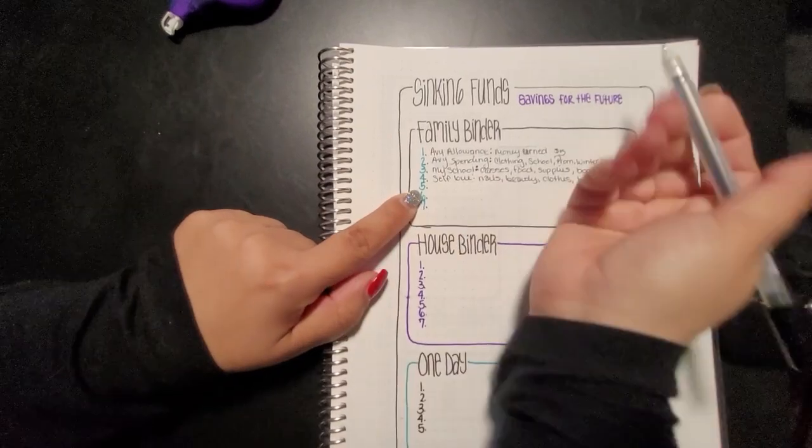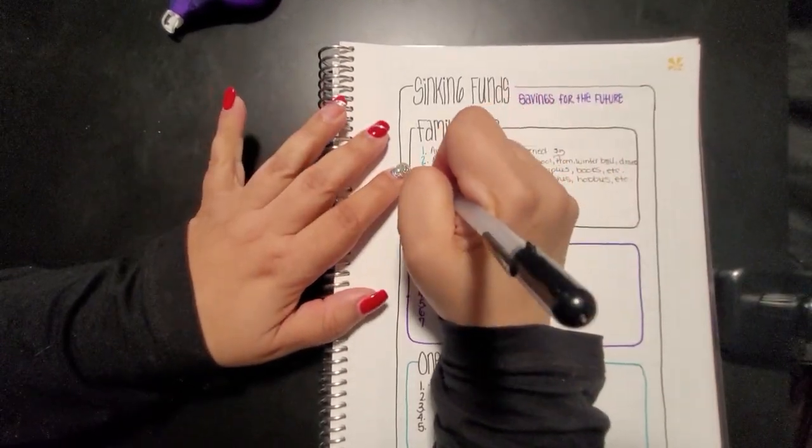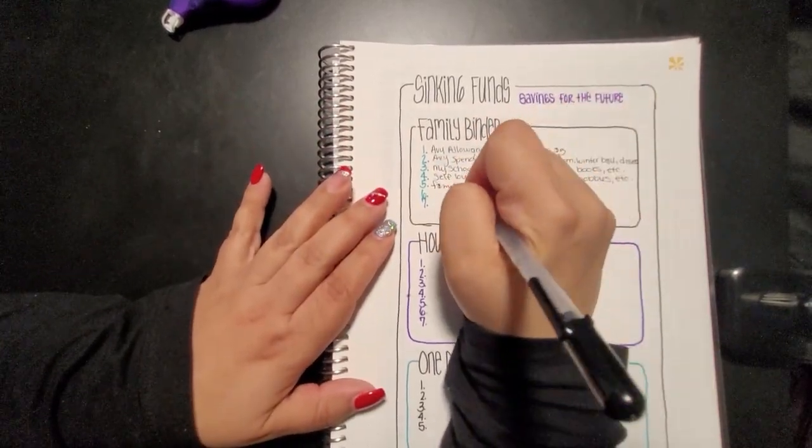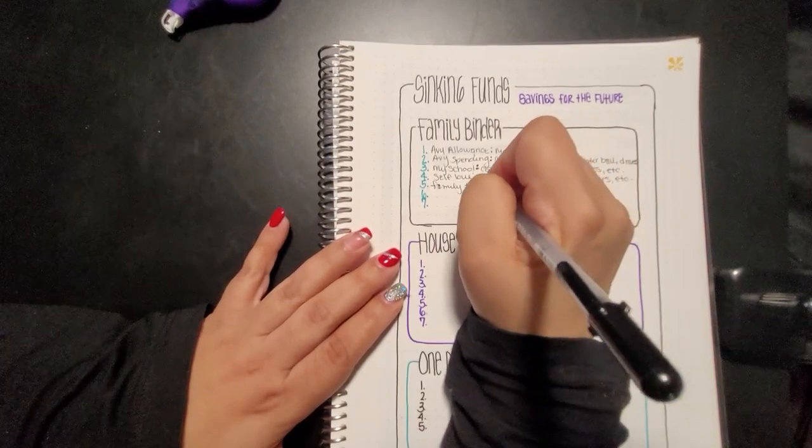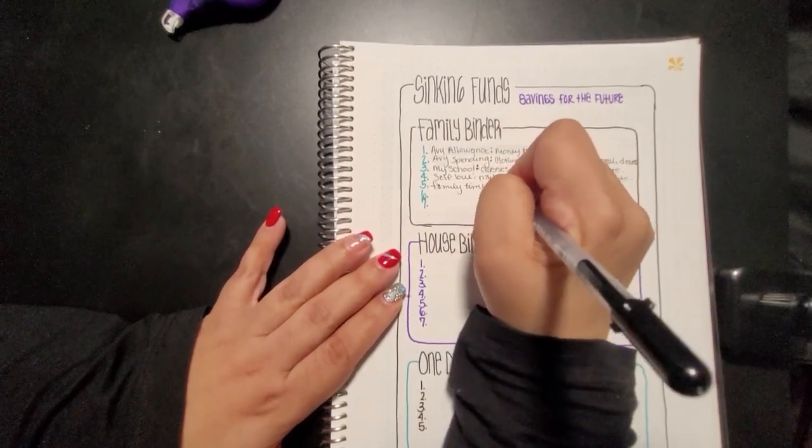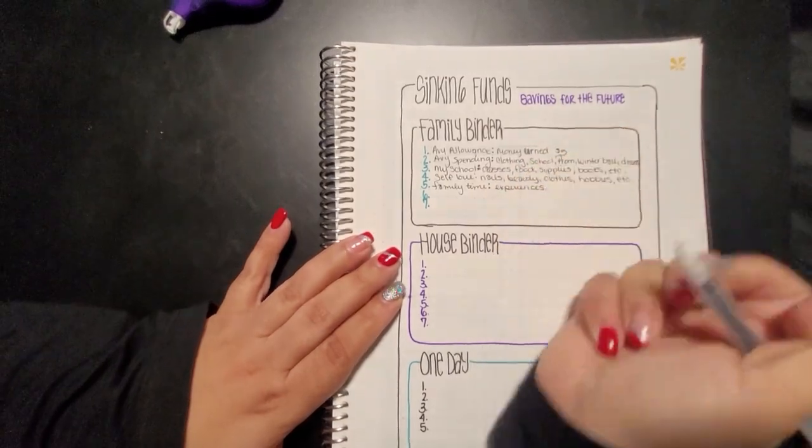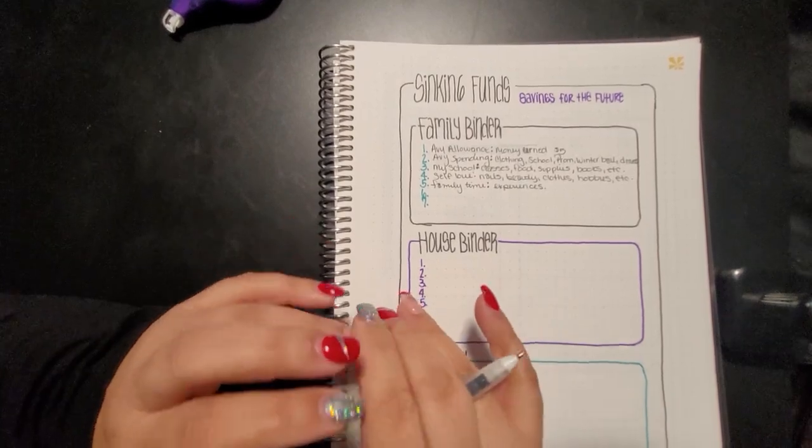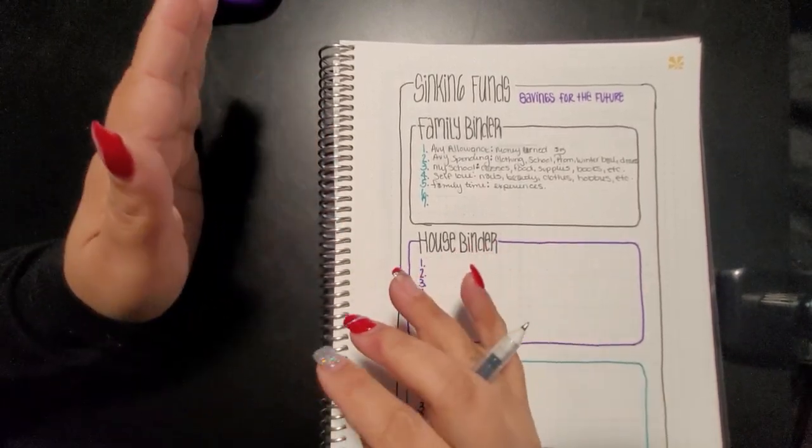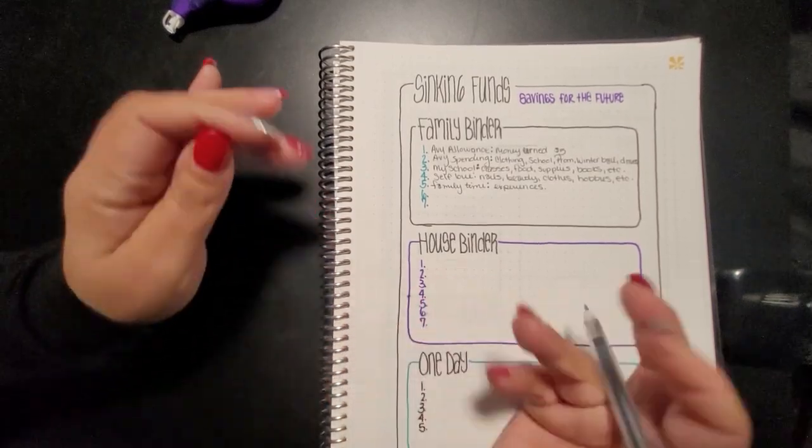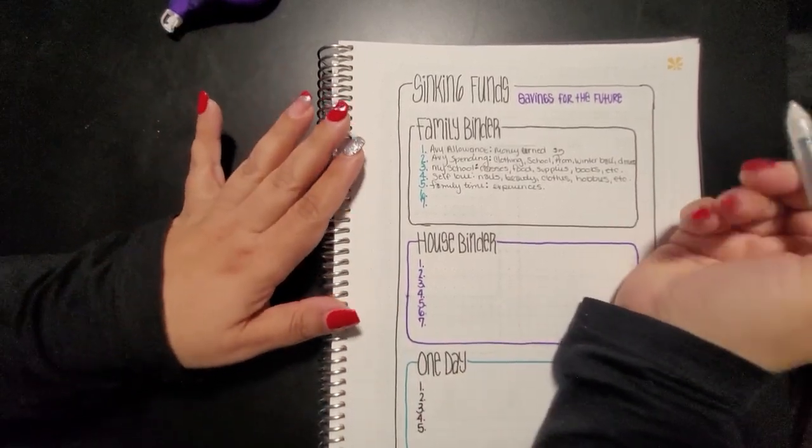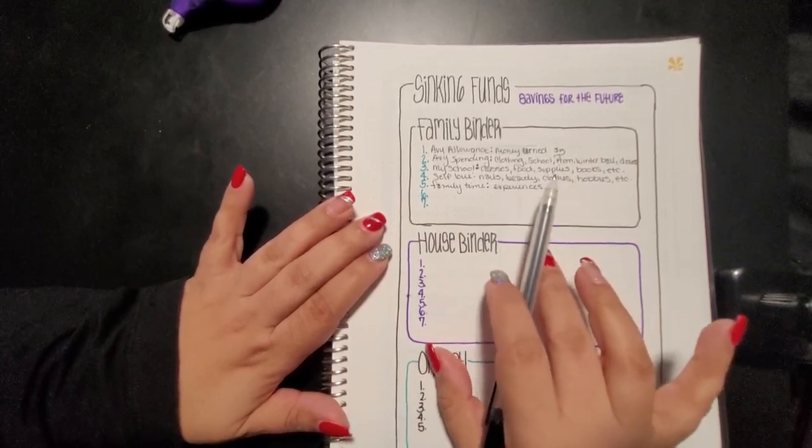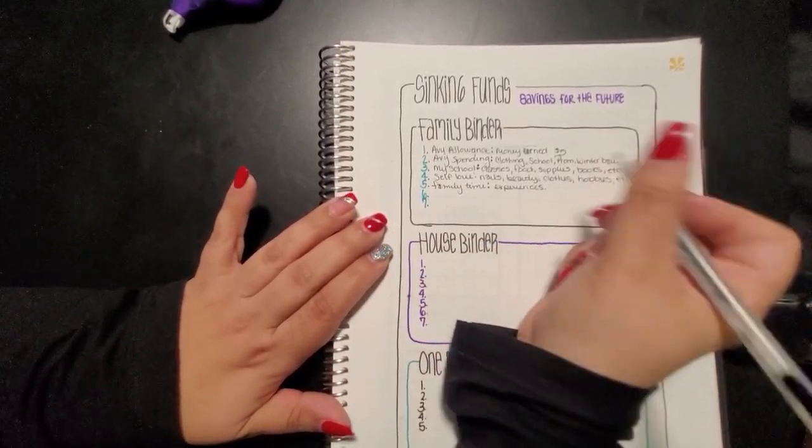Number five is going to be my family time. And this is mainly like experiences. I do a lot of stuff with my daughter, like we'll go to the thrift shop together or we'll go to the flea market together or we'll go to a movie or to a concert, stuff like that. Anything that we do as a family, if we go to the zoo, anything, we're just going to go ahead and take it out of this envelope.